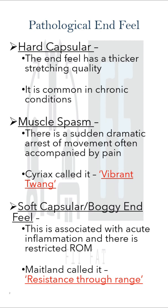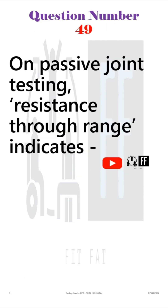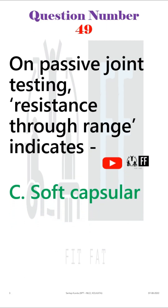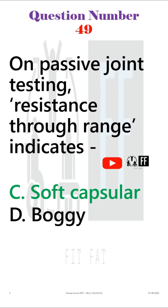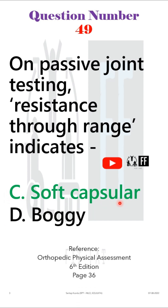Maitland called this resistance through range. If we follow the David J. Maggi book, the answer could be option C and option D. But I prefer to answer this as option C, because soft capsular is the main pathological end-feel, also called boggy end-feel. You can check all this in the David J. Maggi book.